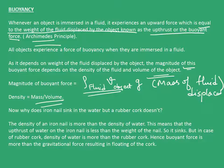The density of an iron nail is more than water, meaning the upthrust of water on the iron nail is less than the weight of the nail, hence it sinks. But for rubber cork, the density of water is more than the cork. Hence buoyant force is more than the gravitational force of the cork, resulting in floating.